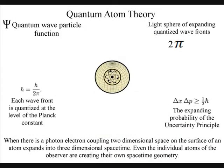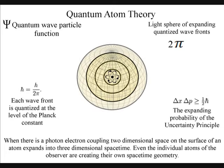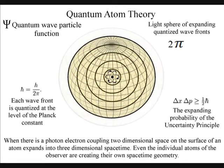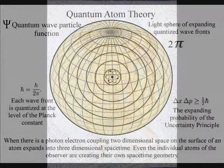When there is a photon-electron coupling, two-dimensional space on the surface of an atom expands into three-dimensional spacetime. Even the individual atoms of the observer are creating their own spacetime geometry.